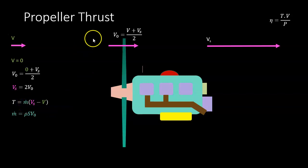The mass flow from the continuity equation is the density times the area of the disc times the velocity of the air going through the disc. Substituting back into the equation, instead of Vs we use 2V0, and V is zero. So we have an equation for thrust which is 2ρSV0².